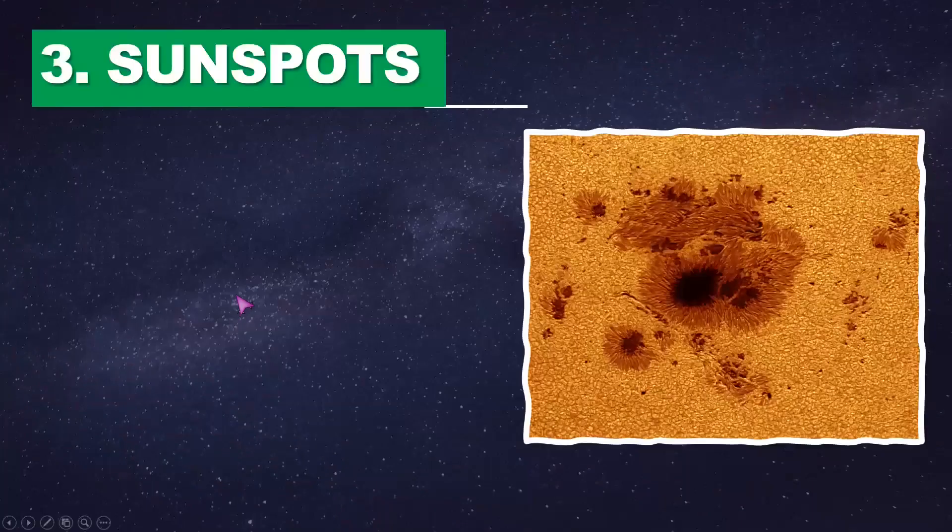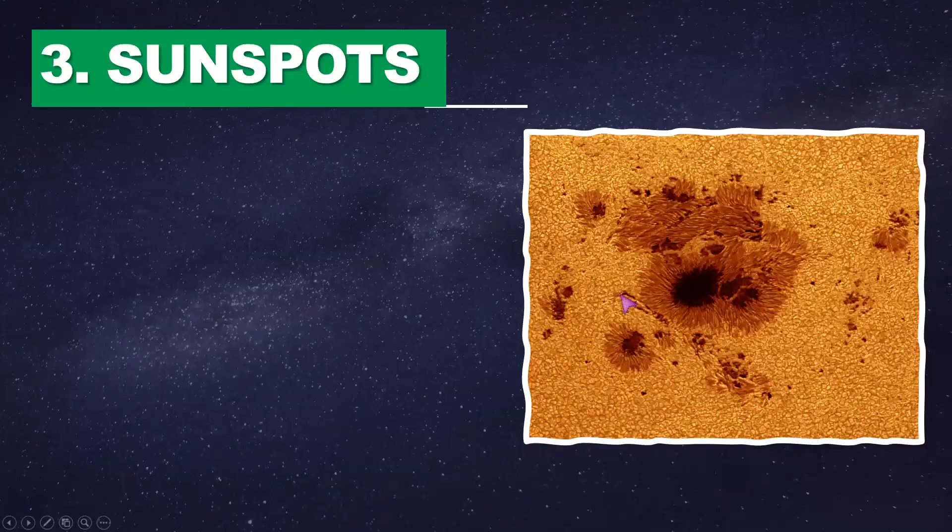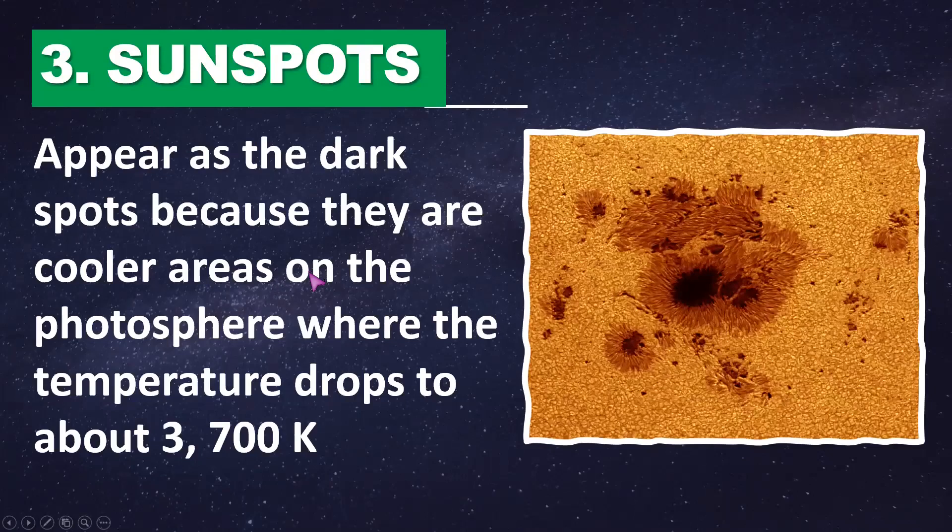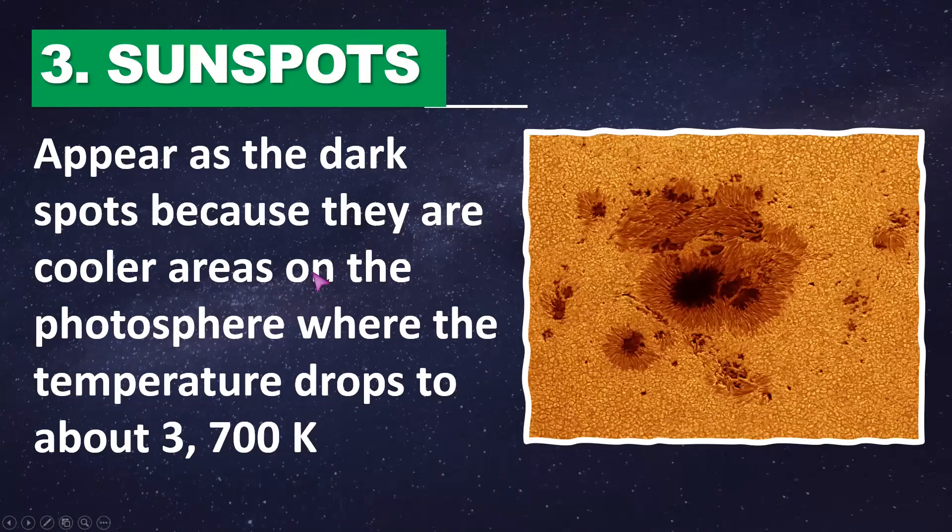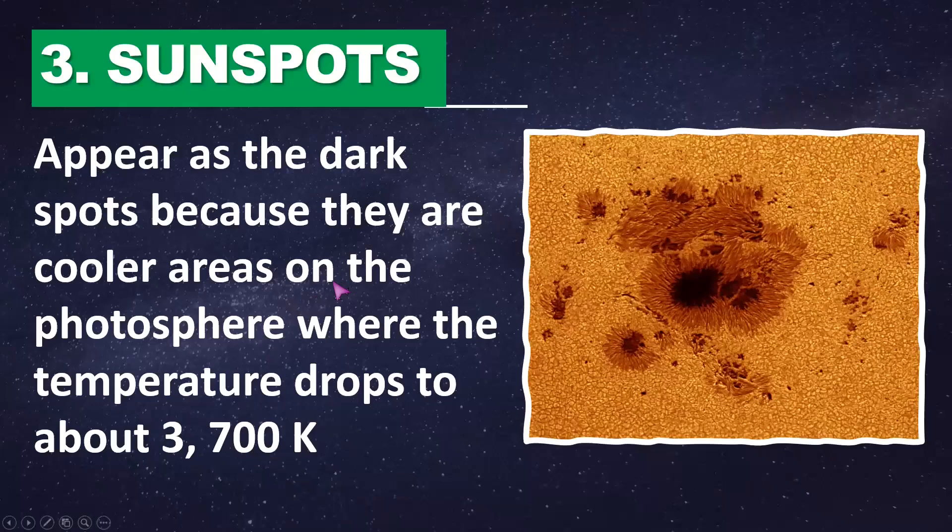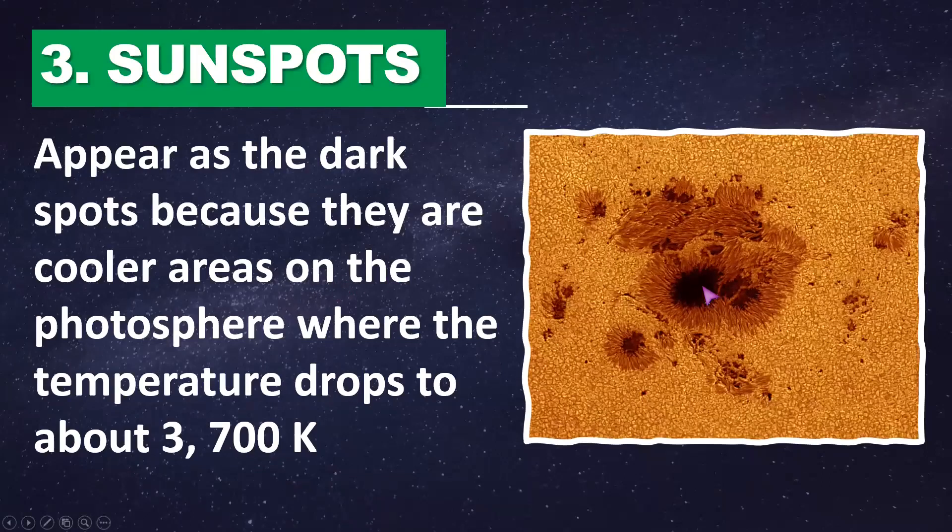Third, we have the sunspots. The sunspots appear as dark spots because they are cooler areas on the photosphere where the temperature drops to about 3,700 degrees Celsius.